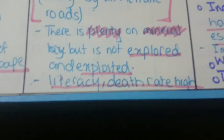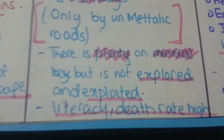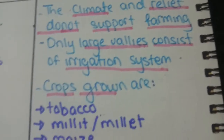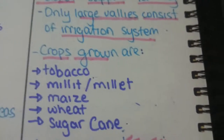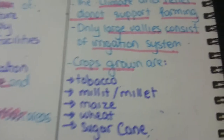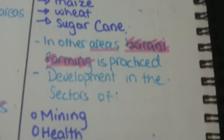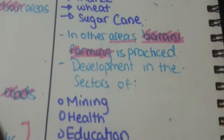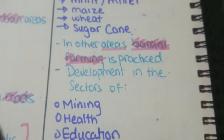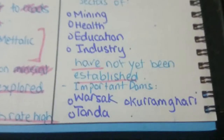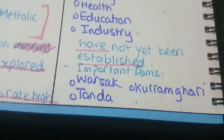There is plenty of mineral wealth but it has not been explored and exploited. Literacy rate and death rate are high. Climate and relief features do not support farming; only large valleys such as the Vale of Peshawar can consist of irrigation systems. Crops grown here are tobacco, millet, maize, wheat, and sugarcane. In other areas, Barani farming is practiced. Development in the sectors of mining, health, and education industry has not yet been established. Important dams here are Barsak, Tanda, and Kuram.